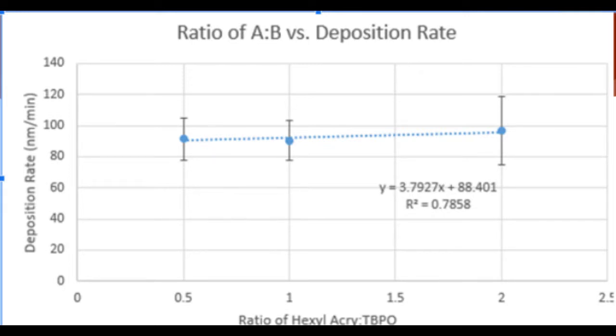Comparing the deposition rates of each ratio shows a slight positive linear trend to the natural log of deposition rate when increasing from 1 to 2, to 1 to 1, to 2 to 1. However, the standard deviation of the data shows that the difference between ratios is not significantly different from each other, thereby showing that there is no visible correlation in this dataset.